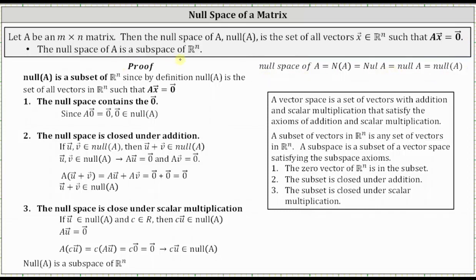The null space of A is a subspace of R^n. To prove this, we first need to show that the null space of A is a subset of R^n. By definition, the null space of A is a subset of R^n since it is the set of all vectors in R^n such that A times X equals the zero vector. In order to prove the null space is a subspace of R^n, we need to satisfy the three subspace axioms: number one, the zero vector of R^n is in the subset; number two, the subset is closed under addition; and number three, the subset is closed under scalar multiplication.